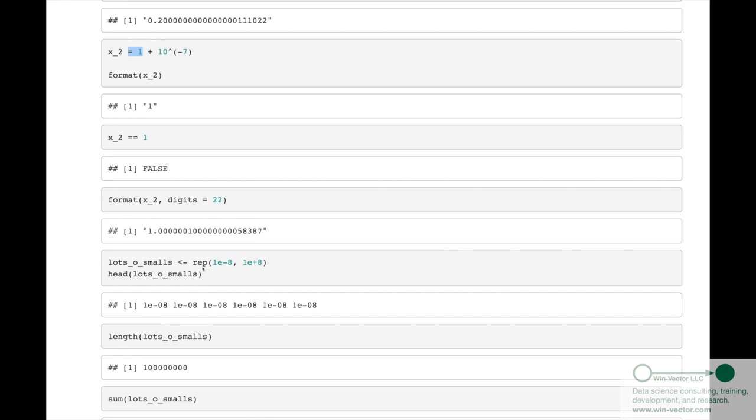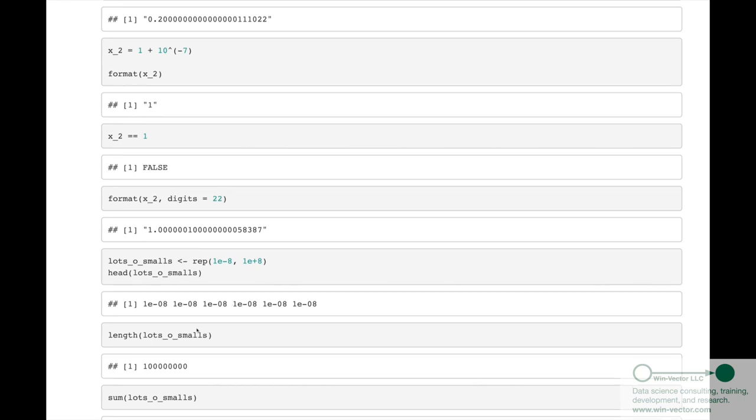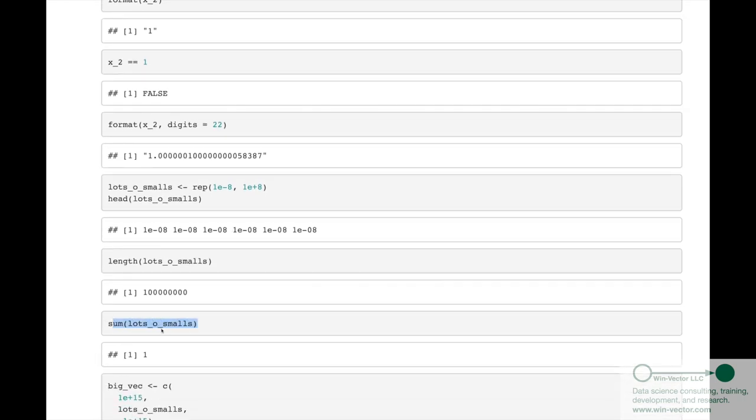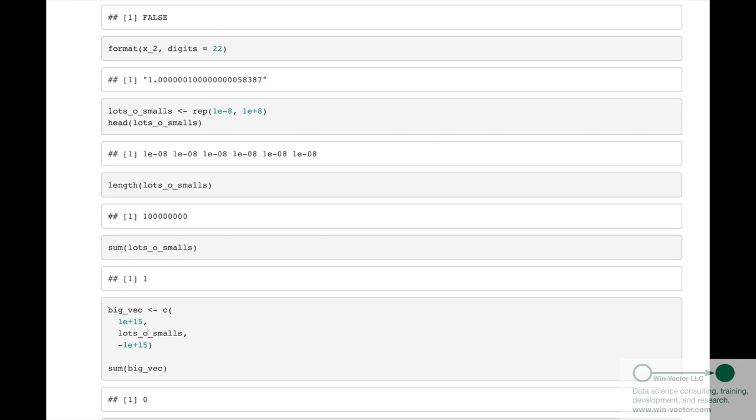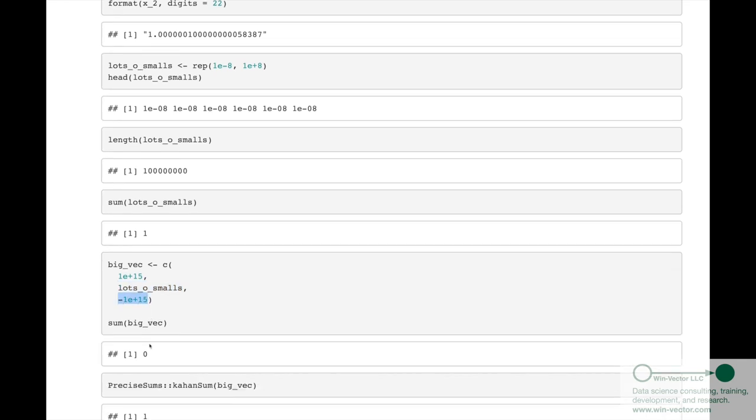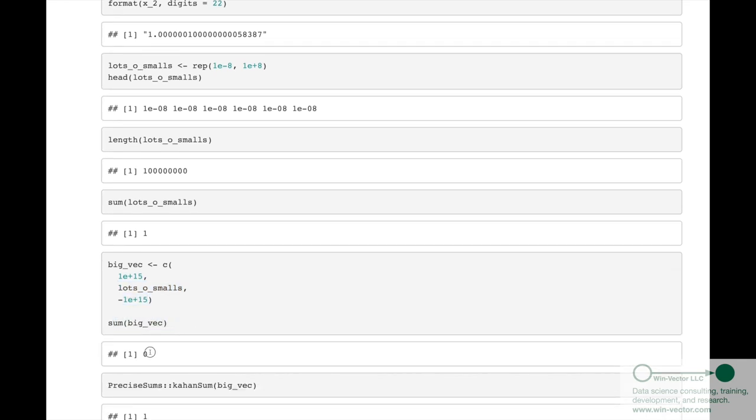Okay, and let's show how the summing doesn't work. We're going to build a very large array of very tiny values. So it's 1 times 10 to the minus 8, repeated 10 to the 8th times. And, therefore, it sums up to 1. Each one of them is 1 over the length of this array. So this sums up to 1, as we see. Now we build a vector with a very large value, concatenated with all these values, then one very large negative value. Sum it up. We get the wrong sum.